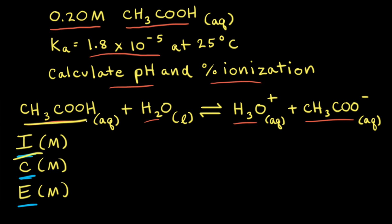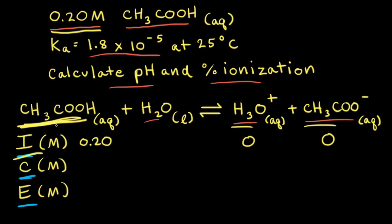The initial concentration of acetic acid is 0.20 molar, so we can put that in our ICE table under acetic acid. If we assume that the reaction hasn't happened yet, the initial concentrations of hydronium ion and acetate anion would both be zero. Some of the acetic acid will ionize, but since we don't know how much, we're going to call that X.